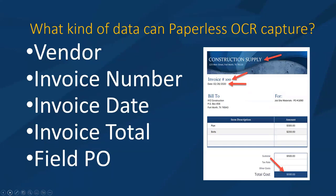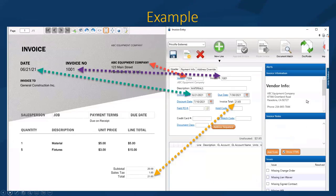What kind of data can Paperless OCR capture? Here are a few examples: vendor, invoice number, invoice date, invoice total, and PO number. Those are just some of the fields we can extract during the OCR process and populate into corresponding fields. You can see how the corresponding information is pulled from the invoice image itself and mapped into the correct fields — that's what happens during the OCR process when it runs.